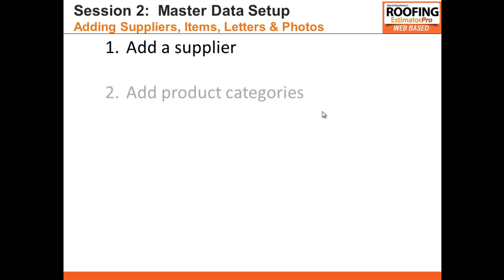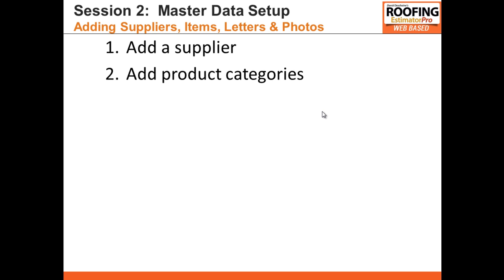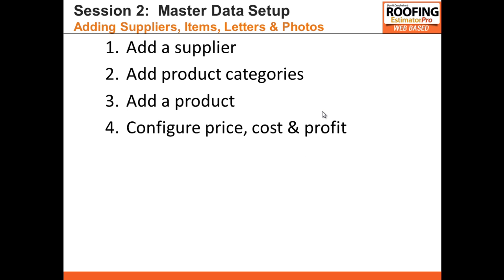We'll start by adding a supplier. We'll add relevant product categories to the system so that we can properly and easily select the products we want to add to estimates and jobs. We'll then go ahead and add a product to the system and configure the price.